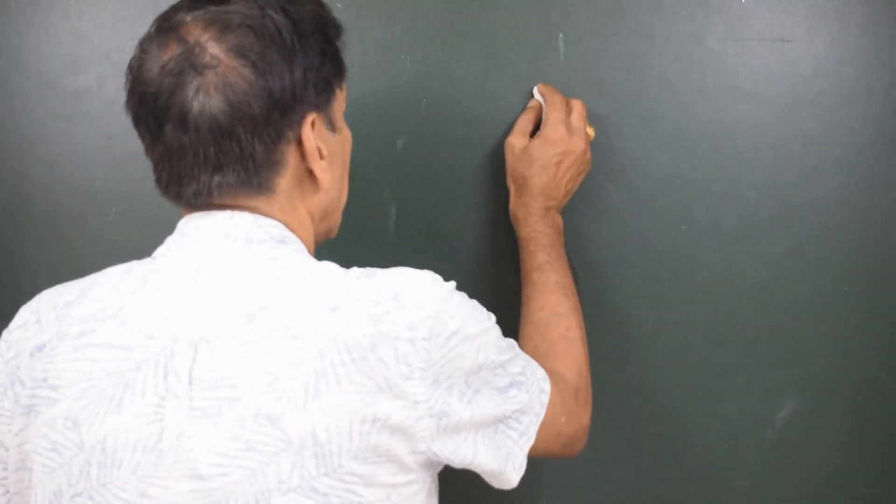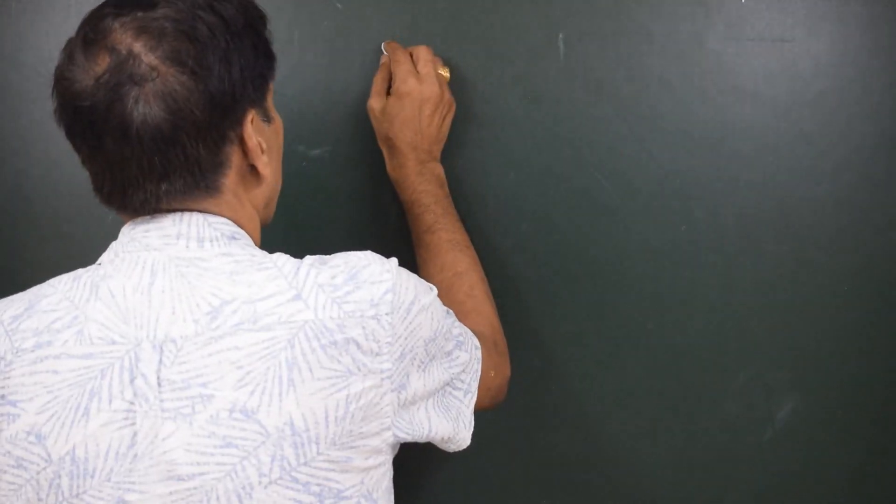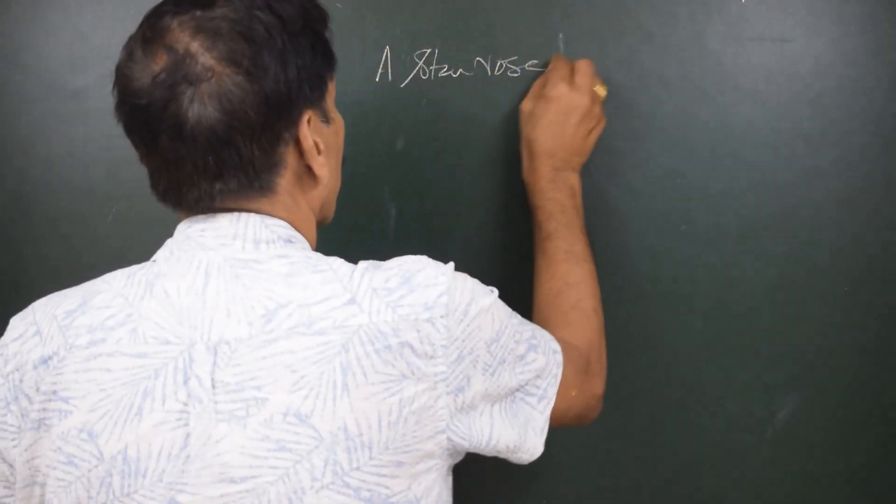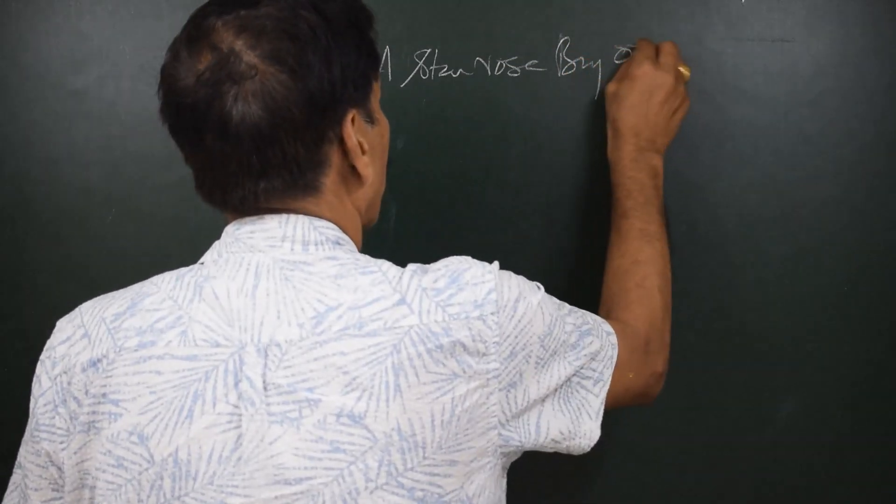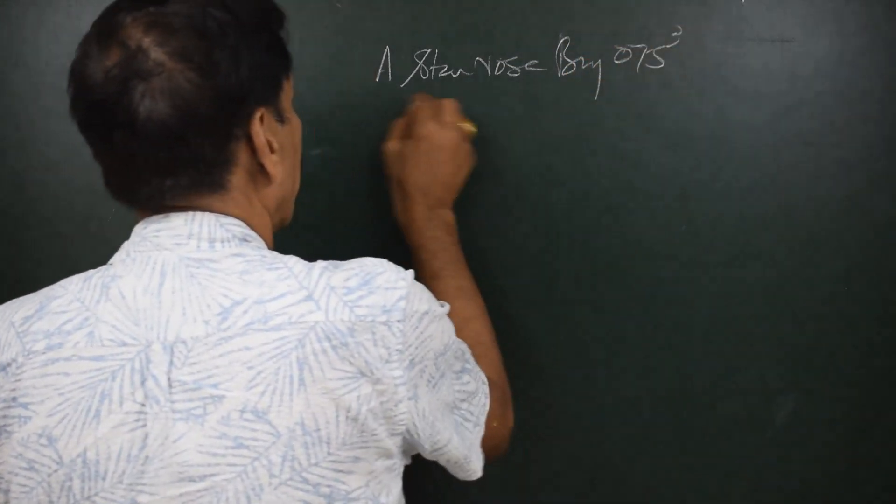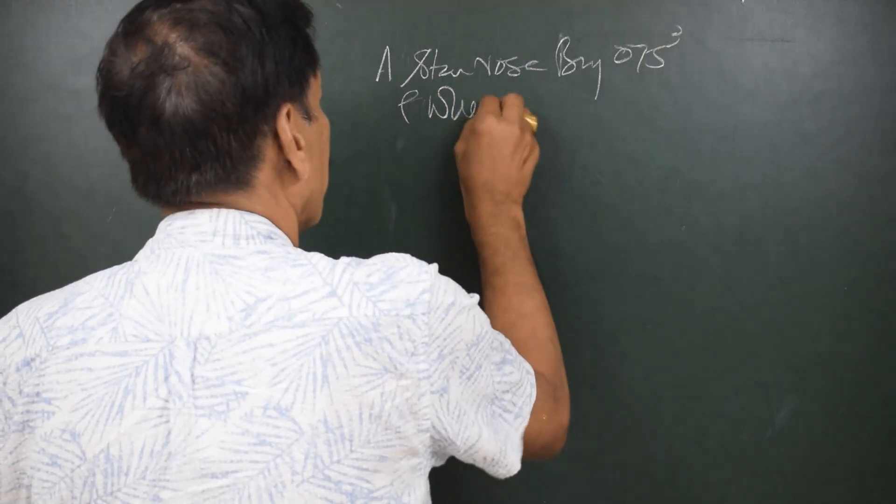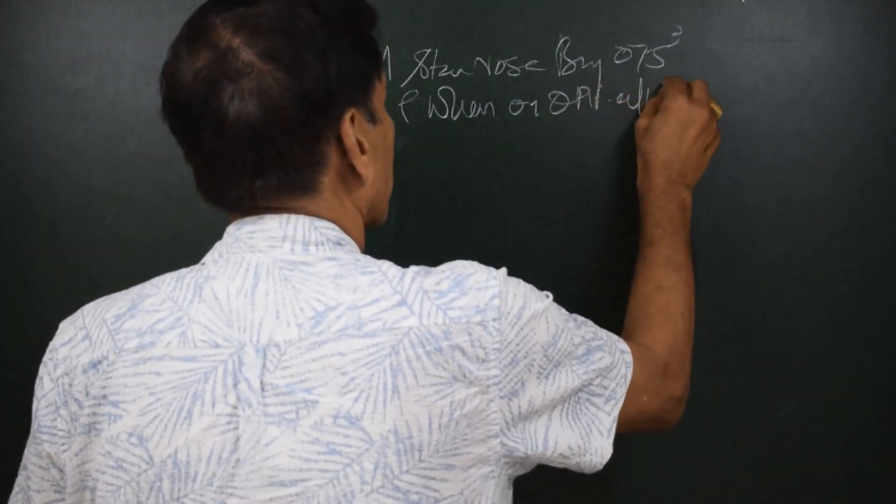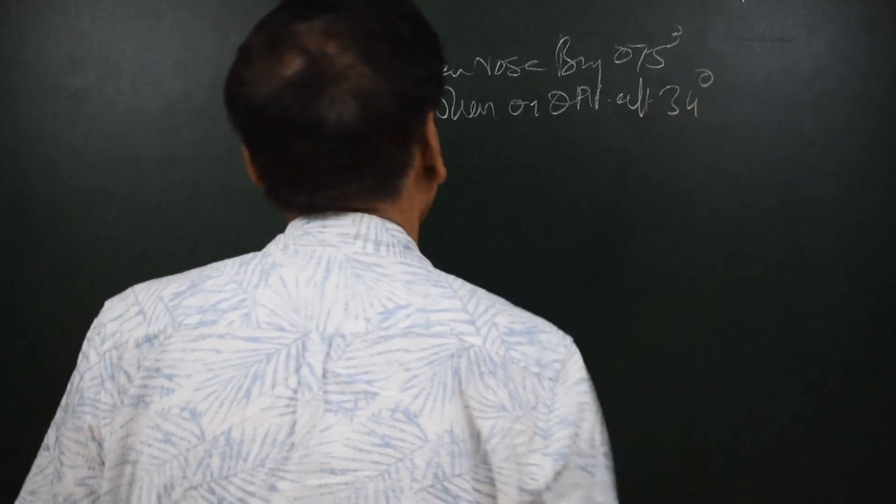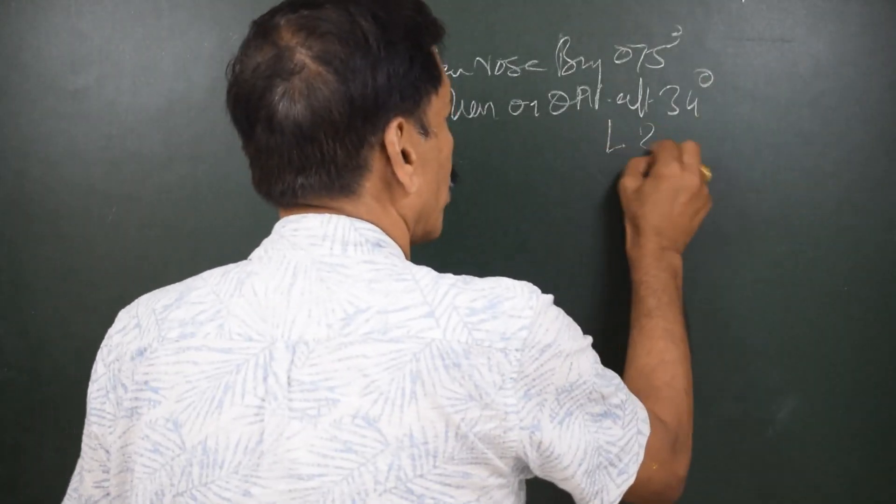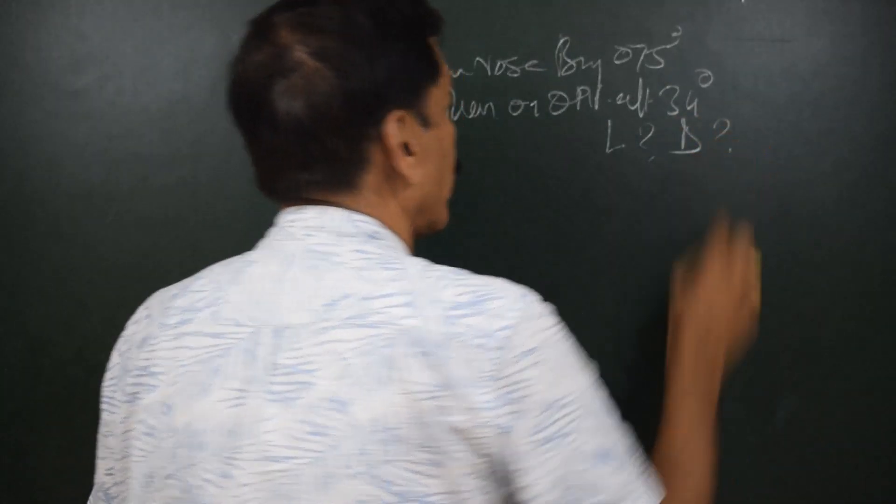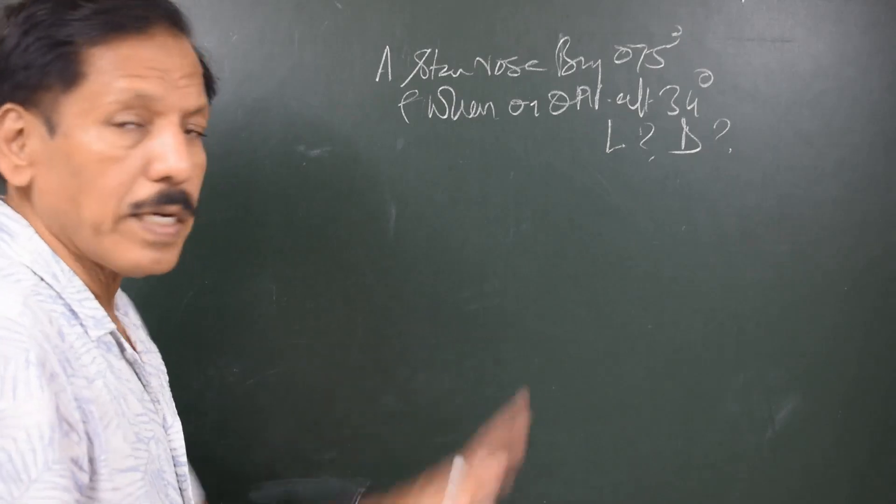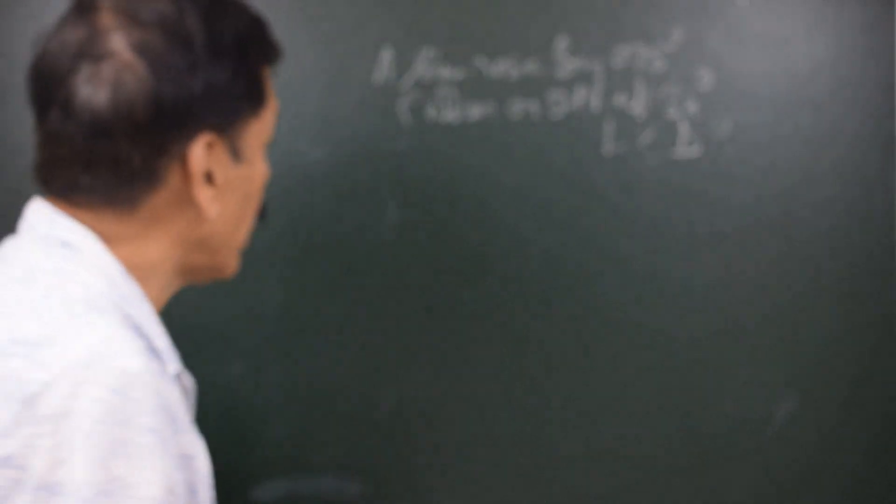Here is a question where it says that a star rose bearing 075 and when on prime vertical, observer's prime vertical, the altitude was 34 degrees. We have to find out what is the latitude of the observer and what is the declination of the star. Nothing else is given.